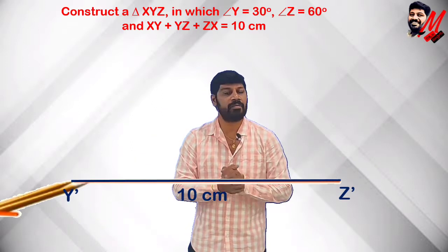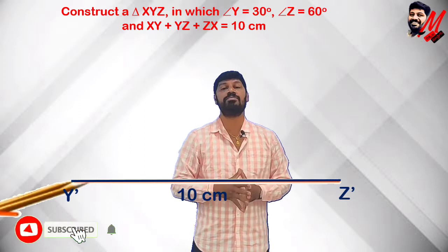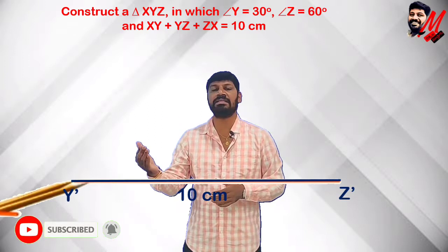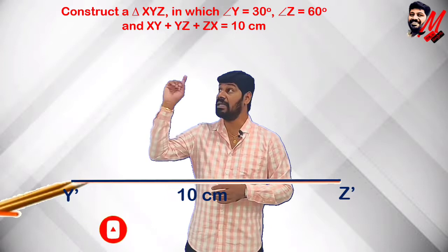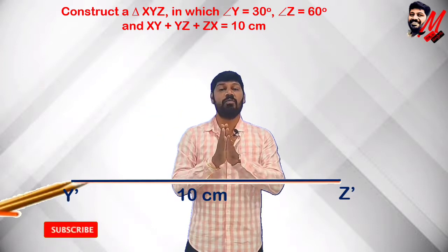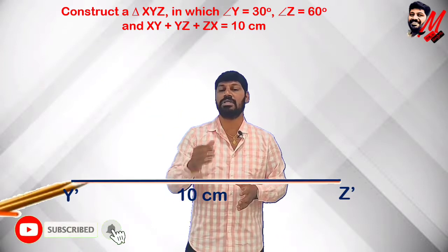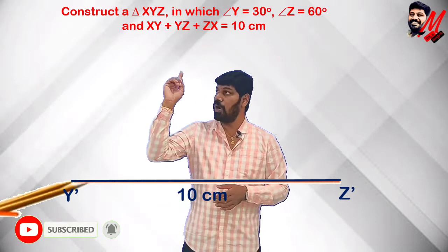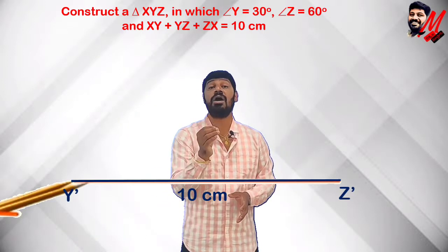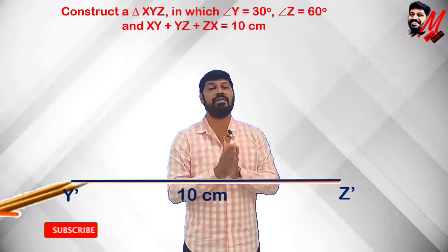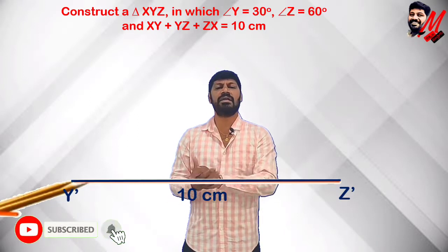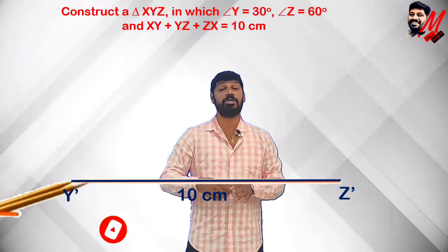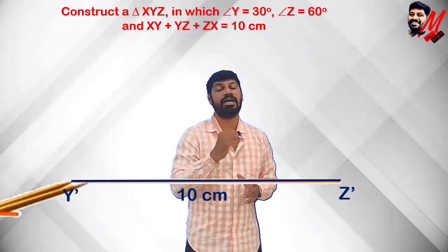Now the most important thing: unlike the previous problem where we construct the full angle, here we observe that one angle is 30° and another is 60°. So we construct each angle as half of the given angle, because it is not the whole angle but half that we use in the construction.